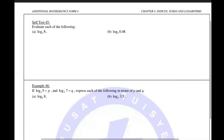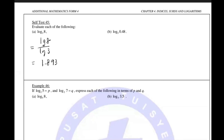For the next part, I introduce LG and put 8 on top, LG 3 below. Type it into your calculator — the answer is approximately 1.893. And for the second one, put LG 0.48 divided by LG 5 and use your calculator. The answer is negative 0.4560.